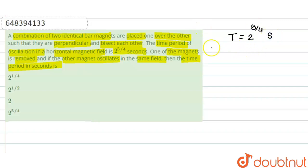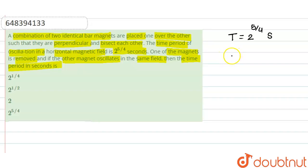If we remove one of the magnets, the other magnet still moves in the same magnetic field, meaning the magnitude of that magnetic field remains the same. We need to calculate the new time period of oscillation for that single magnet.